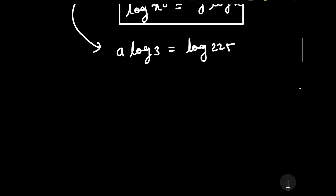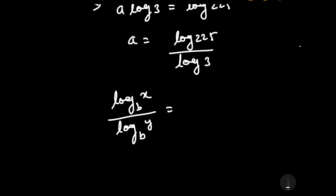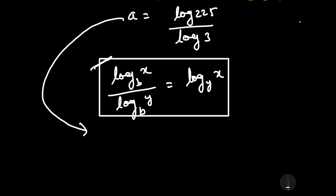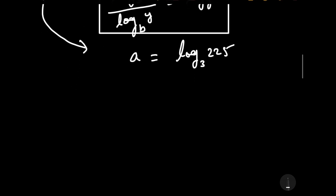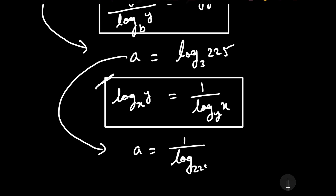Therefore A is equal to log 225 by log 3. Using the property that log b of x divided by log b of y equals log y of x, we can write A as log base 3 of 225, and further as A is equal to 1 upon log base 225 of 3.